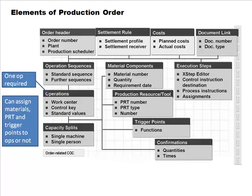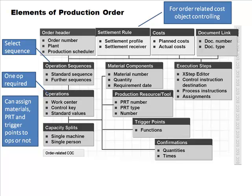At the top of the production order you see the settlement rule and costs. If the routing has multiple sequences, you select the appropriate sequence. The settlement rule and cost elements are required in the production order if you are using order-related cost object controlling — in other words, if you want to do cost accounting at the order level. If you use other approaches such as product-related settlement, those two things won't be part of the production order.